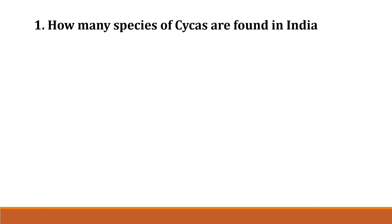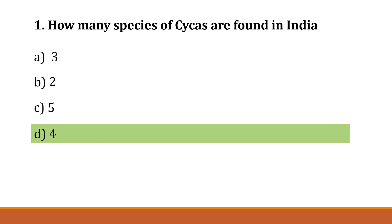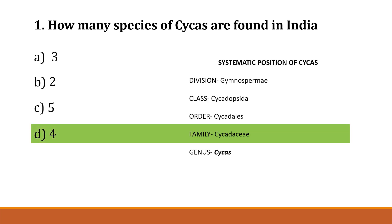Question number 1: How many species of Cycas are found in India? Option A: 3, Option B: 2, Option C: 5, Option D: 4. Correct answer is Option D, 4. The systematic position of Cycas is division Gymnospermae, class Cycadopsida, order Cycadales, family Cycadaceae, genus Cycas.